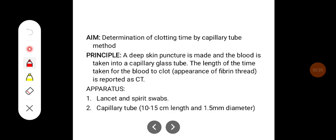In clotting time, the aim is to determine clotting time by capillary tube method. The principle is a deep skin puncture is made and the blood is taken into a capillary glass tube. The length of time taken for the blood to clot, that is the appearance of the fibrin thread, is reported as clotting time.